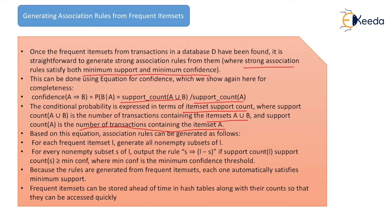Based on this equation, association rules can be generated as follows: for each frequent itemset I, generate all non-empty subsets. For every non-empty subset S, output the rule S → (I minus S) if the support count of I divided by the support count of S is greater than or equal to the minimum confidence. Because the rules are generated from frequent itemsets, each one automatically satisfies the minimum support.